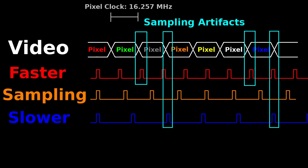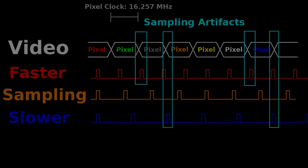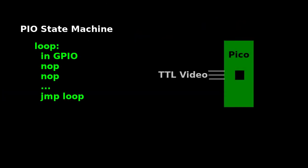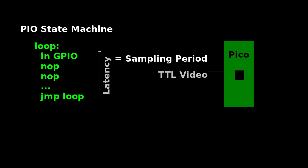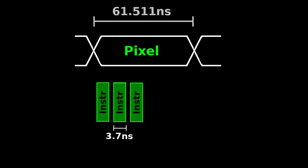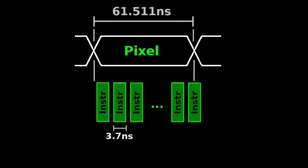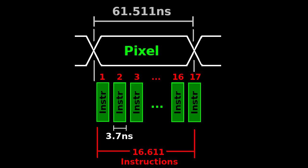So the solution is to make sure that the PICO samples the input at the exact frequency. Sampling is done with the PICO's PIO state machines by reading the GPIO values in a loop, so the sampling period is the latency of the sampling loop body. At 270 MHz, each PIO instruction takes 3.703 ns to execute. Our target sampling period is 61.511 ns. Dividing 61.511 ns by 3.703 ns gives us 16.611, which is not an integer. So we can't create a loop that takes exactly 61.511 ns by just padding with no-op delays.